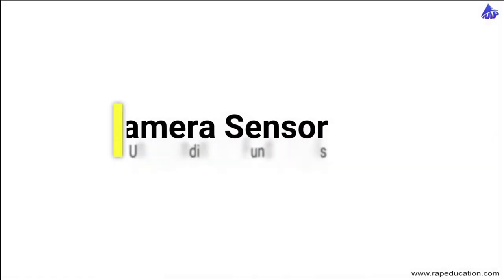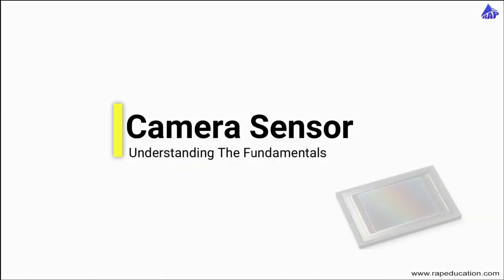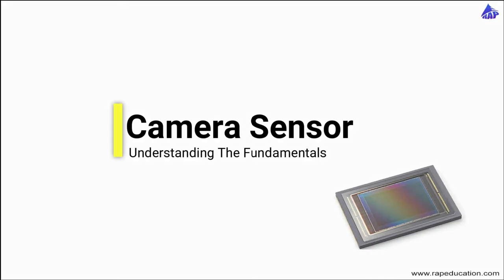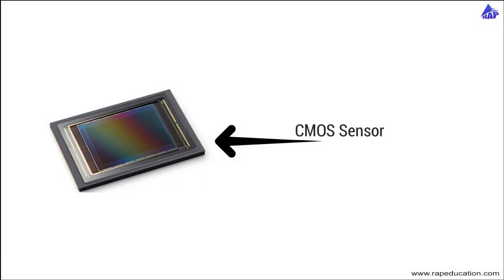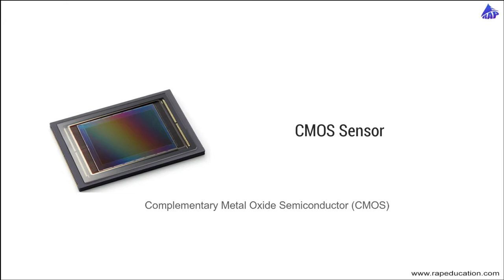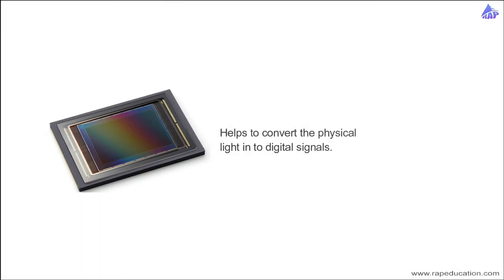Hello and welcome everyone. In this lesson we are going to look at the digital image sensor. There are many types of image sensors available in the market. As of now we will be understanding the CMOS sensor only. CMOS sensors are everywhere — they are the most advanced image sensor available today. Now let's understand what an image sensor is.